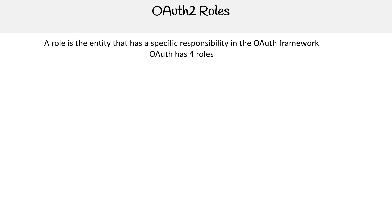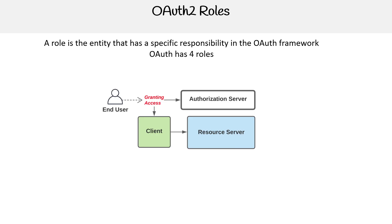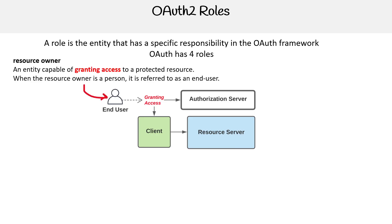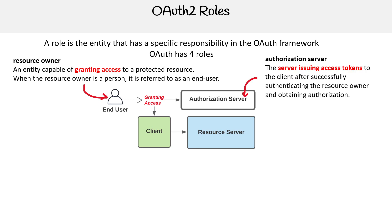Let us take a look at OAuth roles. A role is the entity that has a specific responsibility in the OAuth framework, and OAuth has four roles. The first is the resource owner — an entity capable of granting access to a protected resource. When the resource owner is a person, it is referred to as an end user.